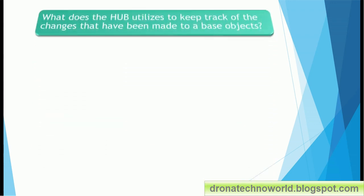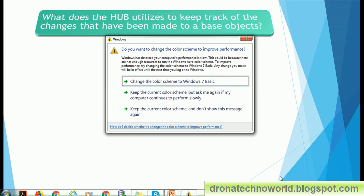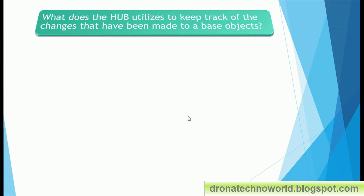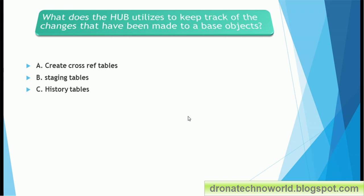Next question: what does the hub utilize to keep track of changes made to a base object? This is a very informative question — when you start doing development you need to track what changes happen over time on those base objects. The options are: option A, cross-reference table; option B, staging tables; option C, history table; option D, match table.